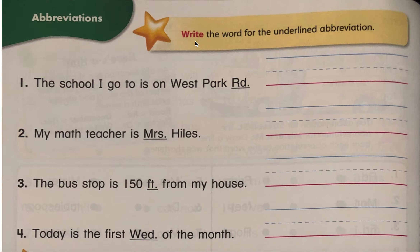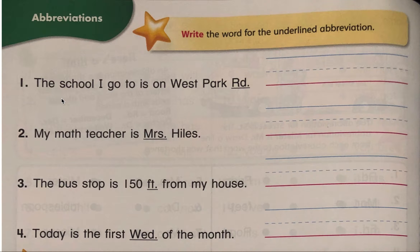For the first activity you need to write the word for the underlined abbreviation. I will read the sentences for you but I will not say the abbreviation. Then you need to write the word for the underlined abbreviation here on the lines. Number one: the school I go to is on West Park or D. What could be the word for this abbreviation? When you know it, write it here on the line.